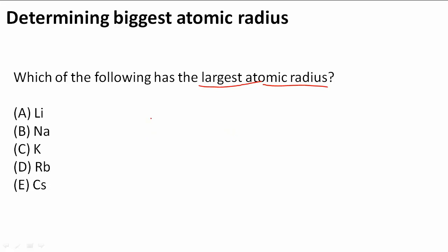We have Li, which is in the first group, Na, K, Rb, and Cs. What we can notice about these answer choices is they actually go down a group.